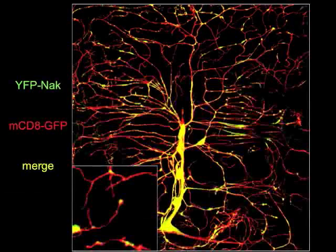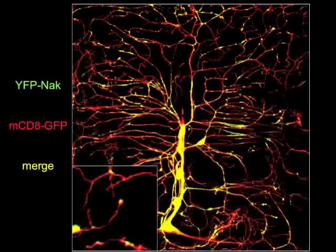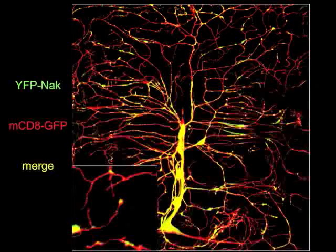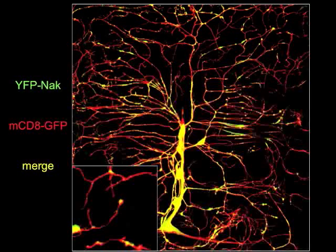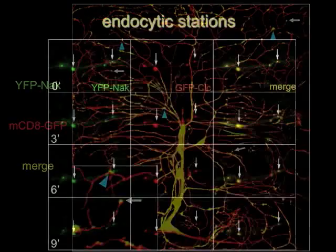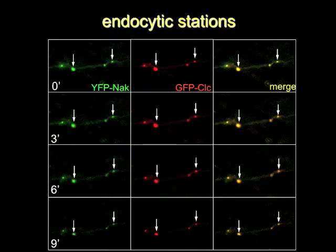We then wondered where Nak is in the dendrite and where highly activated endocytosis occurs. By YFP tagging, we found that Nak is widely expressed in dendrites. More interestingly, if we look at the distal region, YFP-Nak is localized as puncta structures at dendritic tips and branching points in higher-order dendrites. The colocalization of clathrin and other endocytic membrane markers indicates that YFP-Nak puncta are highly associated with endocytosis.